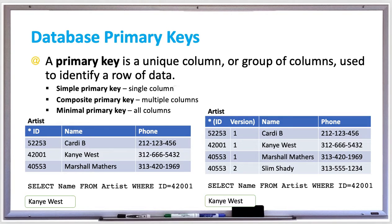In the tables below, you can see that there is an artist table where ID is the primary key, denoted by the little asterisk next to the word ID. And notice that every single row has a unique value for that ID.